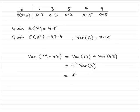So what we've got is 16 for 4 squared, multiplied by the variance of x, and we found that out earlier as 7.15. So 16 times 7.15 gives you 114.4, and there you have the answer to the question.